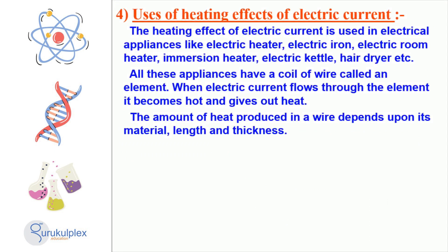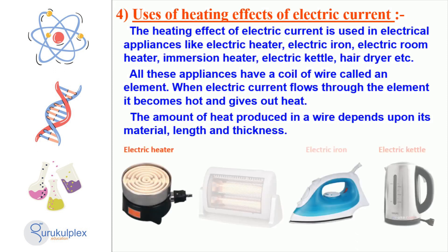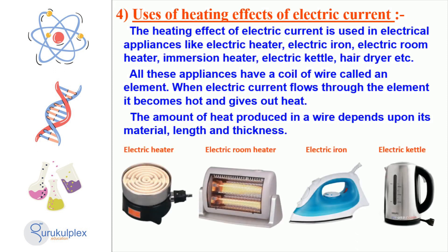Electric current is an essential part of life. Numerous devices within our homes use electricity for their power source, such as electric heaters, electric kettles, electric irons, and hairdryers. These appliances have an element within them which is a coil of wire. When an electric current passes through the element, it gets hot and produces heat. The heat output of the element depends on its material, length, and thickness. It is therefore important to use electricity responsibly.